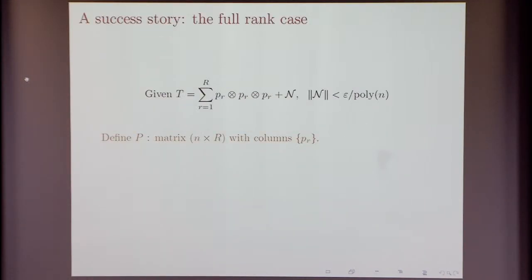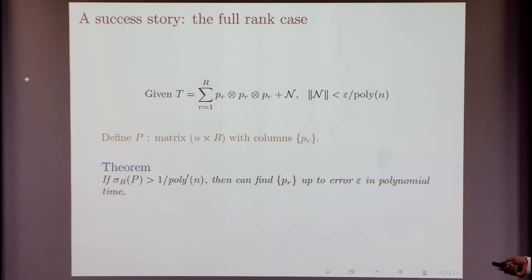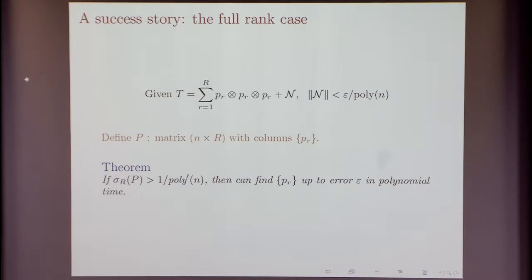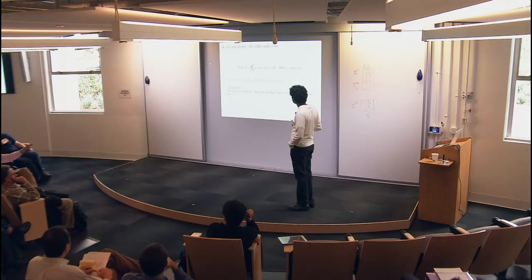One case in which we can solve both these problems is the full rank case — one of the main success stories. Let's say you have a tensor whose decomposition is a sum of outer products P_R, and you know this tensor up to some error. Define the matrix P to be the n×R matrix whose columns are these vectors P_R. The theorem here is that if all the columns of this matrix are linearly independent in a strong sense — that is, the R-th singular value of this matrix is at least 1 over a polynomial in n — then you can recover the decomposition.